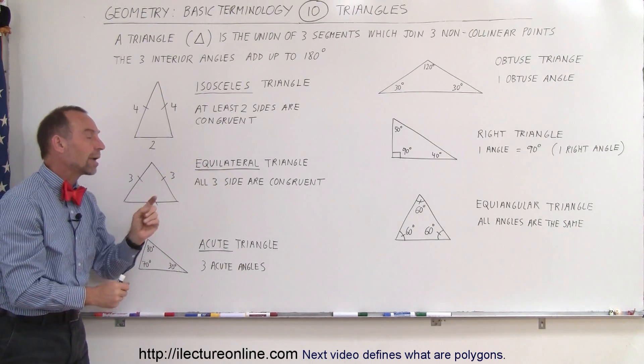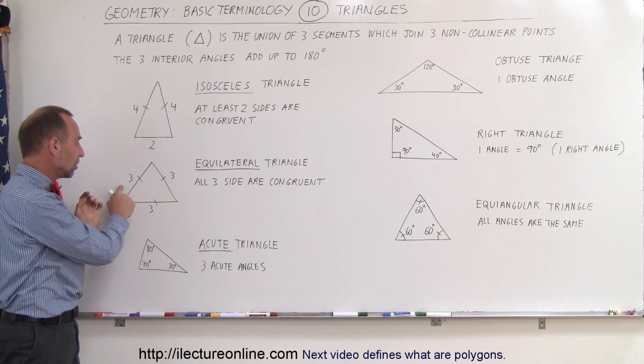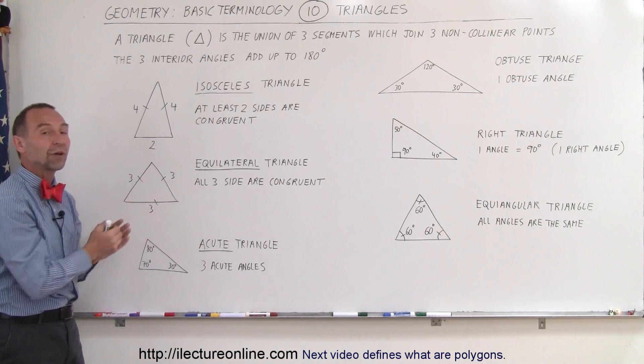An equilateral triangle is where all three sides are congruent, so all three sides have the same length. Here you can see an example where each of them has a measure of three.